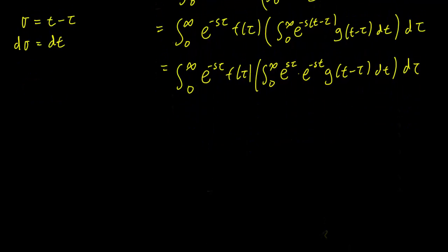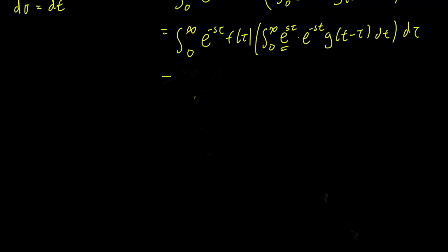So notice here that the e^(sτ) term is a constant with respect to t, there's no little t here in the e^(sτ) term, so we can bring it out. So this equals integral from 0 to infinity, e^(-sτ) f(τ) e^(sτ), we've removed that from outside of the inside integral. So this is just going to be e^(-st), g(t-τ) dt dτ.